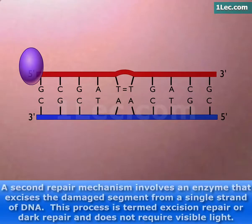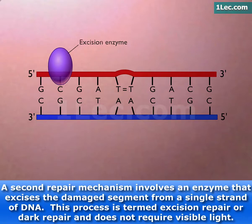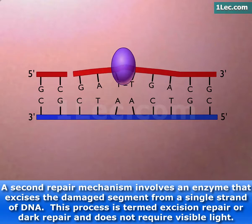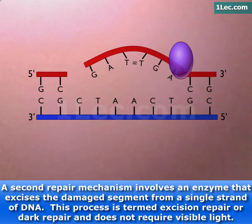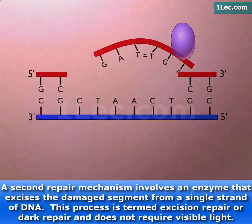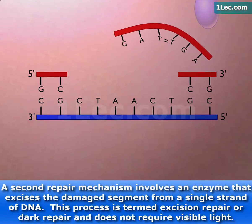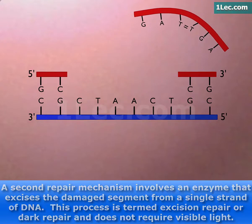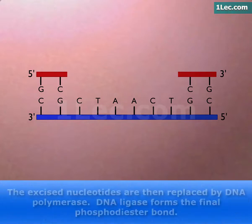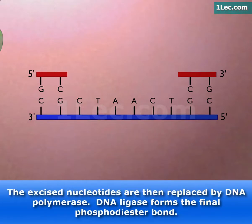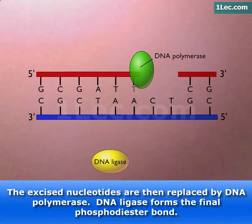A second repair mechanism involves an enzyme that excises the damaged segment from a single strand of DNA. This process is termed excision repair or dark repair and does not require visible light. The excised nucleotides are then replaced by DNA polymerase.